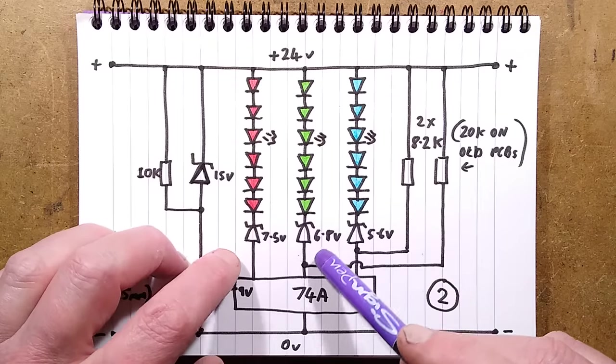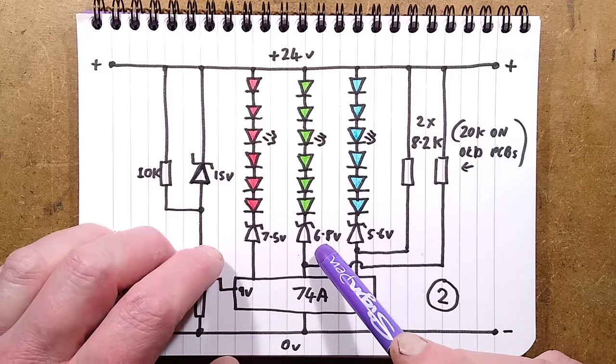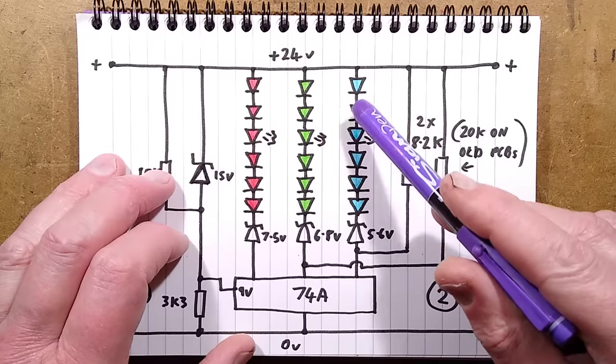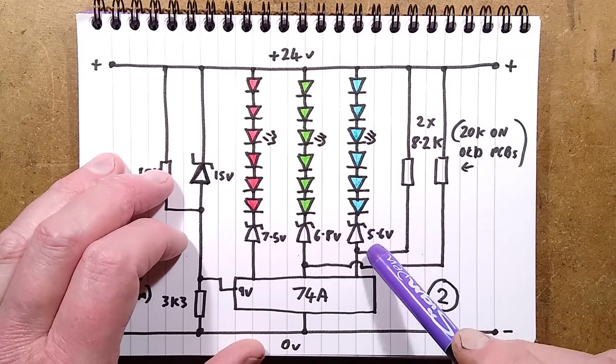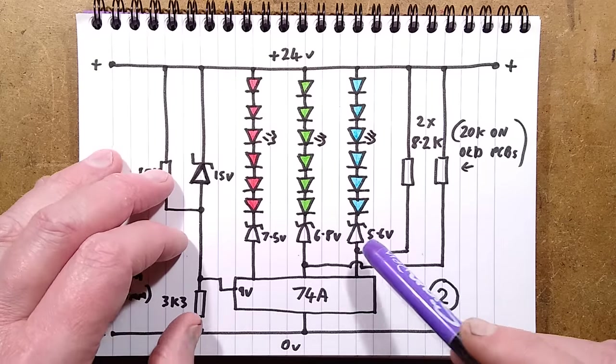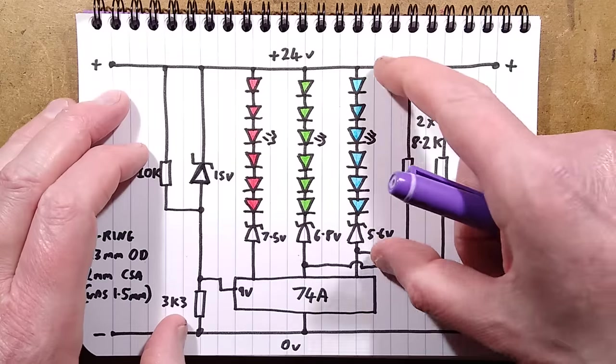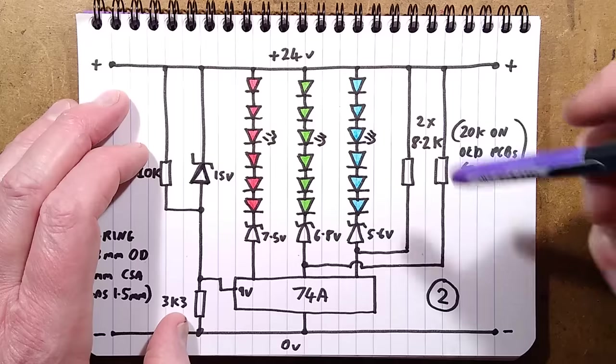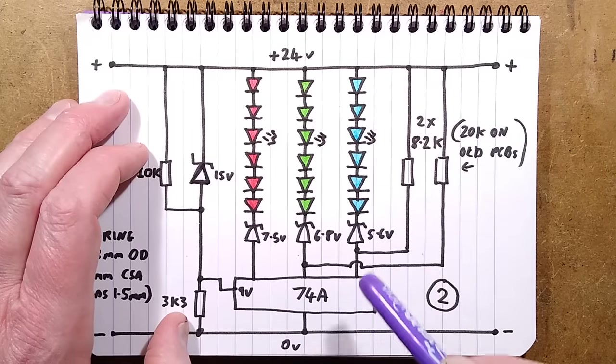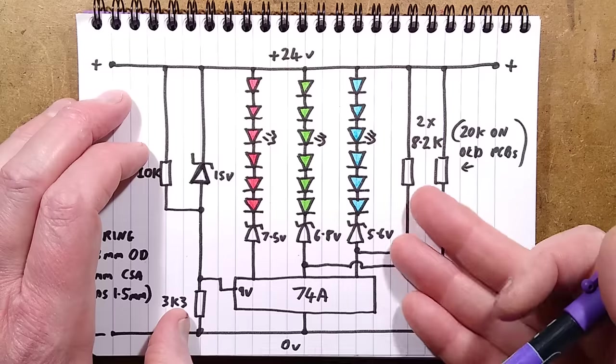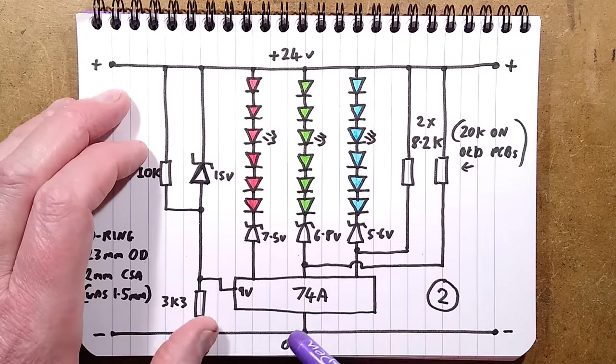The green have the next lowest forward voltage so they've got a lower value zener and then of course the blue is the highest voltage so it's got the 5.6 volt zener, a lower voltage one. I think that's just purely because any voltage they can drop across the LEDs and the zener doesn't have to be dropped across the current regulator on the chip and that little zener there is going to take a bit of significant dissipation away from this chip.